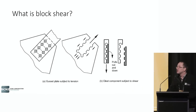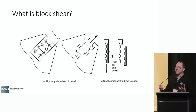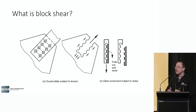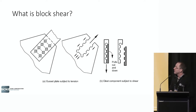So what is block shear? Essentially, it's a rupture of a block of material in a bolted connection. We've got a rupture that is a tension face and a shear failure along the shear plane. Depending on your connection configurations, you can have different modes of block shear failure and different amounts of material that gets ruptured.